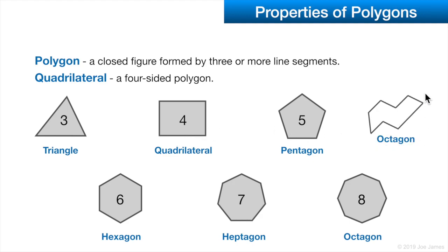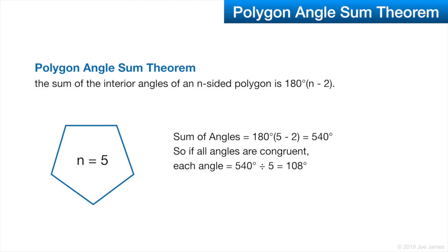This is an example of an irregular octagon. The polygon angle sum theorem tells us that the sum of the interior angles of an n-sided polygon is 180 degrees times (n minus two). Here, n is five, so five minus two multiplied by 180 gives us 540 degrees.